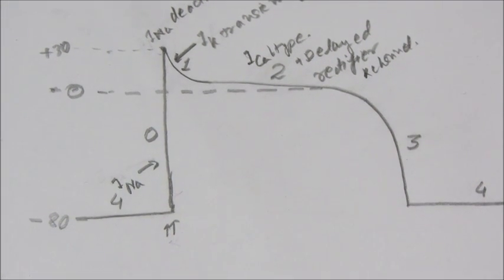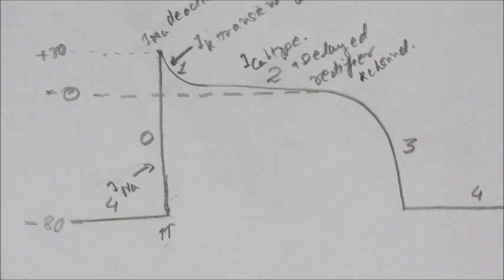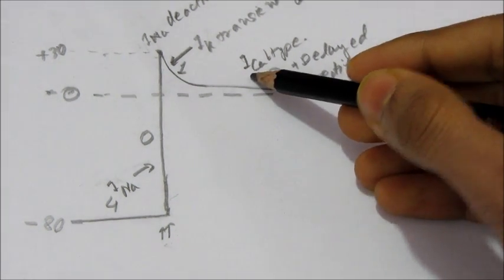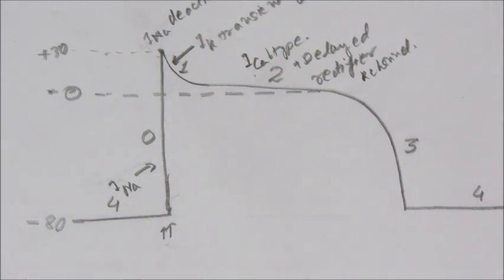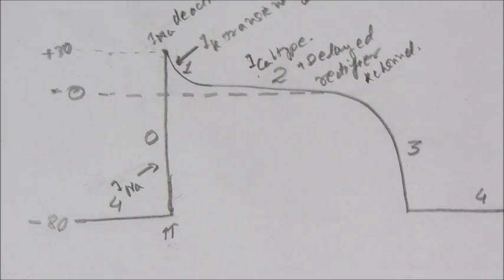The influx of calcium is balanced here by the delayed type rectifier channel, potassium channels, where potassium efflux is occurring. This leads to a plateau phase.